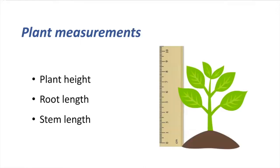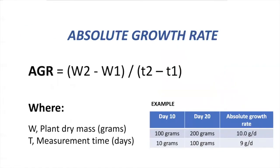And of course, there are very general and basic measurements that we can also use — for example, plant height, root length, and stem length. In order to analyze data, we can calculate the absolute growth rate. This will give you a rate of change of size in your plants per unit of time. We usually relate dry weight, one of the most precise measurements of growth, to a unit of time, and here we usually use days. The unit for absolute growth rate is grams of dry weight per day.